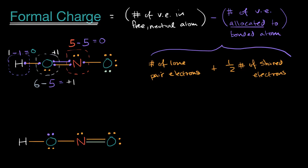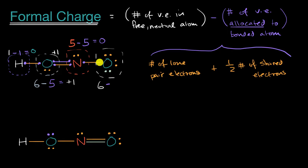Now let's look at this last oxygen. A free, neutral oxygen has six valence electrons. From that, we subtract the valence electrons allocated to the bonded atom: two, four, six lone pair electrons, plus half of this bond — so that's seven allocated valence electrons. Six minus seven equals negative one, so this oxygen has a formal charge of negative one.